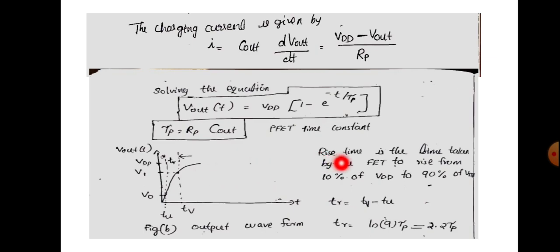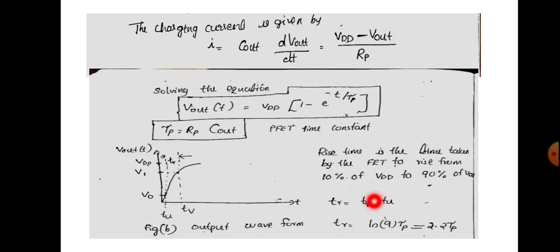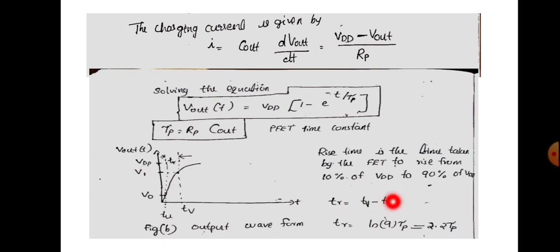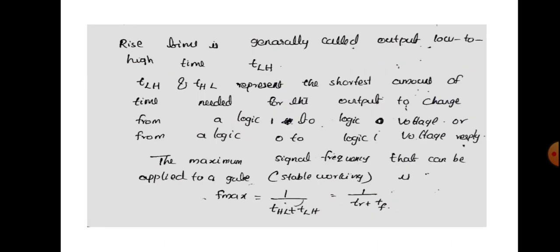If we define the rise time as the time taken by the output to rise from 10% of VDD to 90% of VDD, and substituting R_P into the equation with tau_P equal to R_P into C_out, we can derive the rise time T_R.